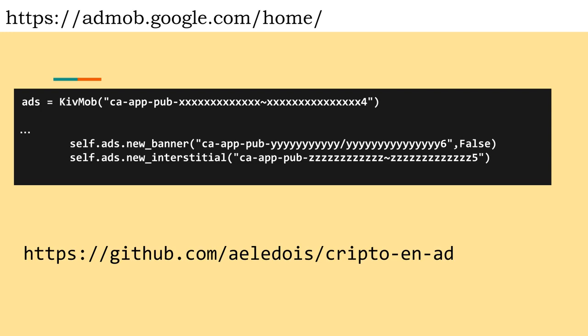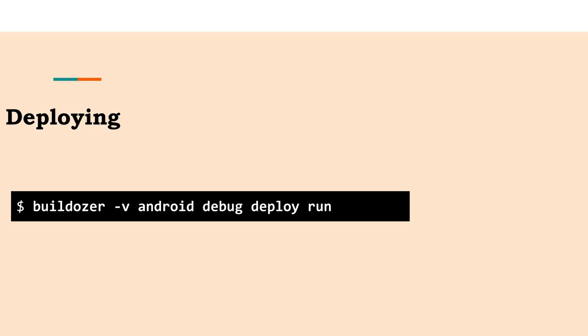This figure shows how your application code should look after inserting your IDs. The complete code for this application can be found on GitHub at the indicated URL. After that we are ready to build and deploy. Run the command: buildozer -v android debug deploy run.